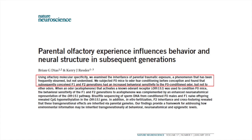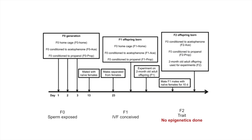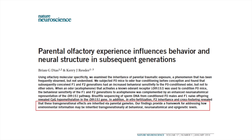The next paper caused a lot of attention. The investigators used a model associating a certain smell with trauma and looked whether this could be found in the next generation — if exposed to the same smell, did the next generation express fear? They did IVF conception using the sperm, but they did absolutely no epigenetic experiments whatsoever in this paper. Yet they concluded that these transgenerational effects are inherited by parental gametes, and that their findings provide a framework for addressing how environmental information may be inherited transgenerationally at behavioral, neuroanatomical, and epigenetic levels. They did absolutely no epigenetics.